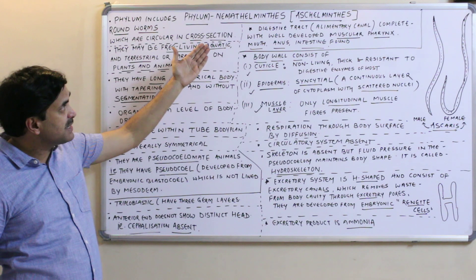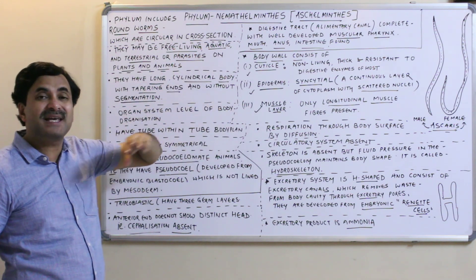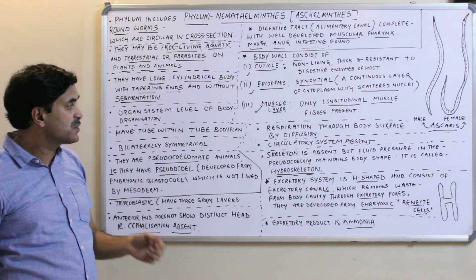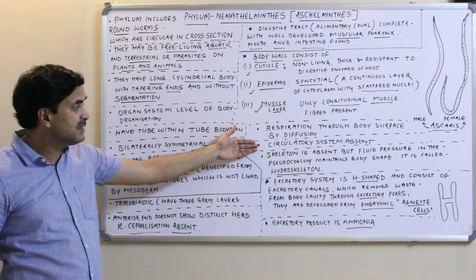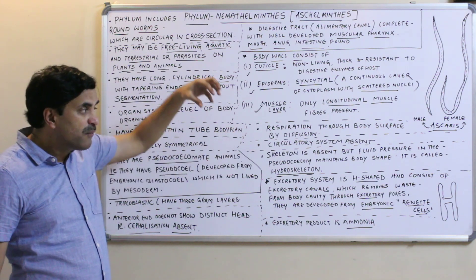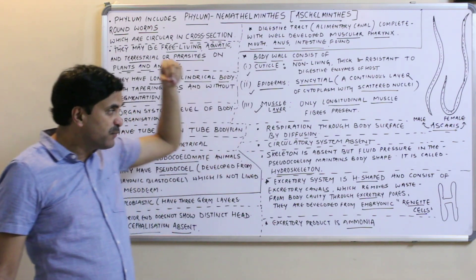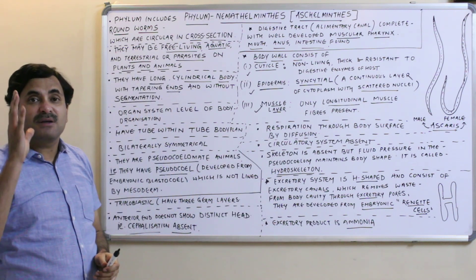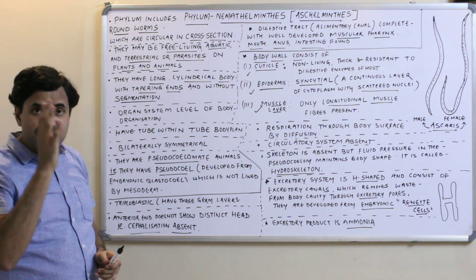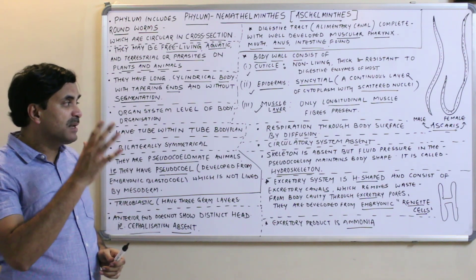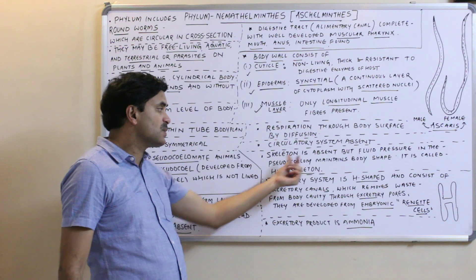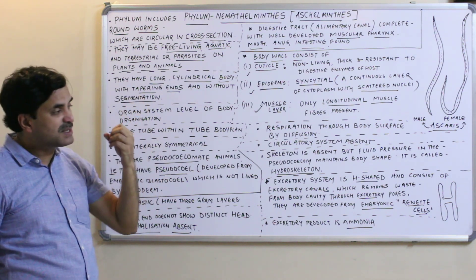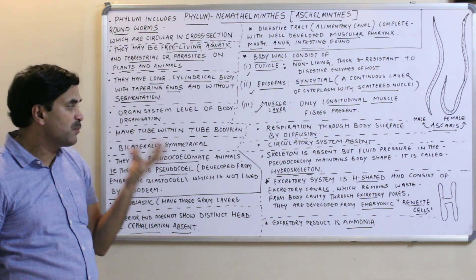In Aschelminthes, the respiratory system is absent; respiration occurs through the body surface by diffusion. The circulatory system is also absent. The skeletal system is absent, but fluid pressure in the pseudocoelom maintains body shape — this is called a hydroskeleton, maintained by the pseudocoelomic fluid.